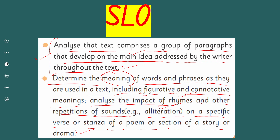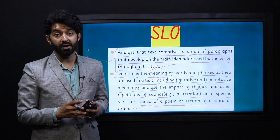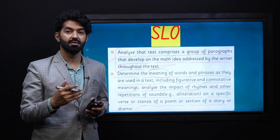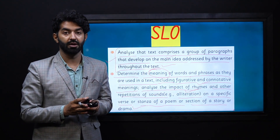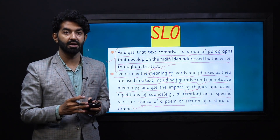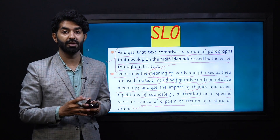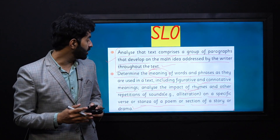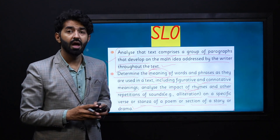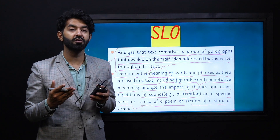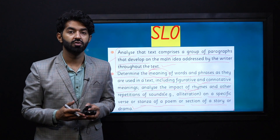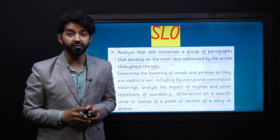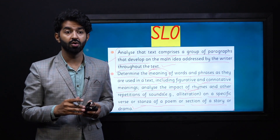We have already seen that the main idea is actually the central idea of any paragraph and it can be found through the topic sentence. Now we are also going to see how we can identify different kinds of meanings through our text. We will be looking at figurative and connotative meanings.